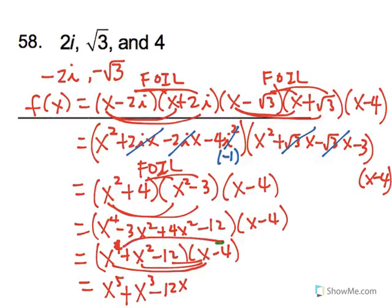Let me use a different color here. So we would have negative 4x to the 4th minus 4x squared, and finally plus 48. Combining all the like terms.